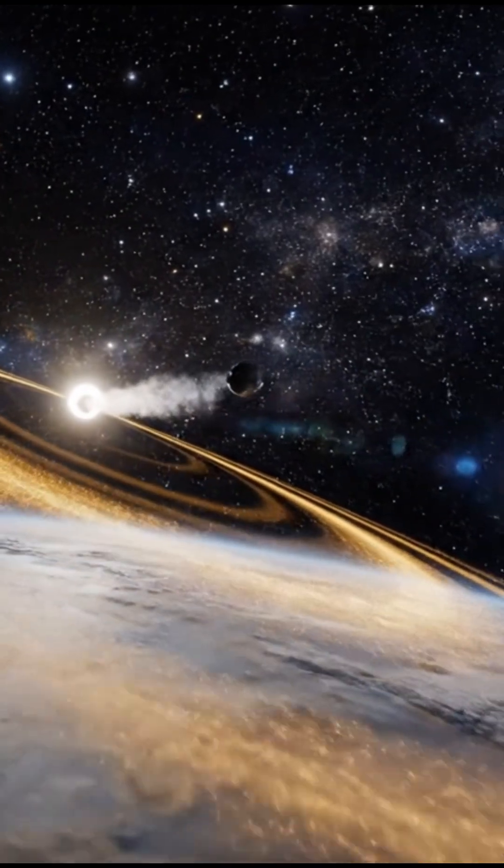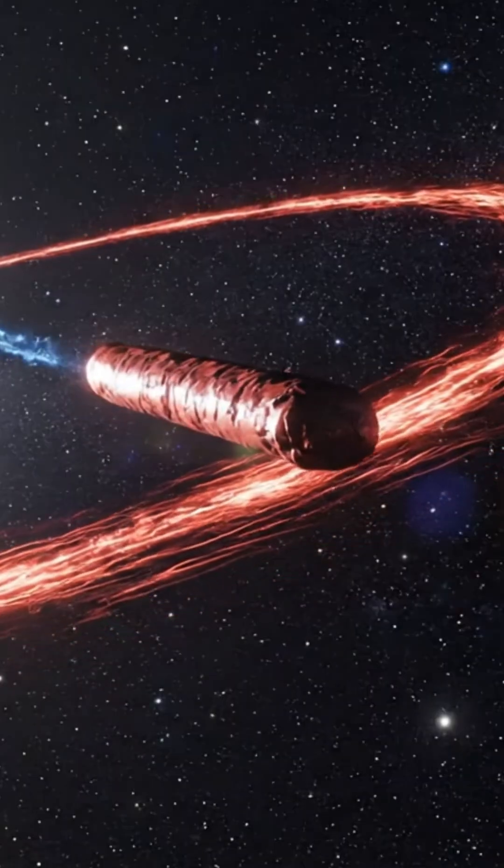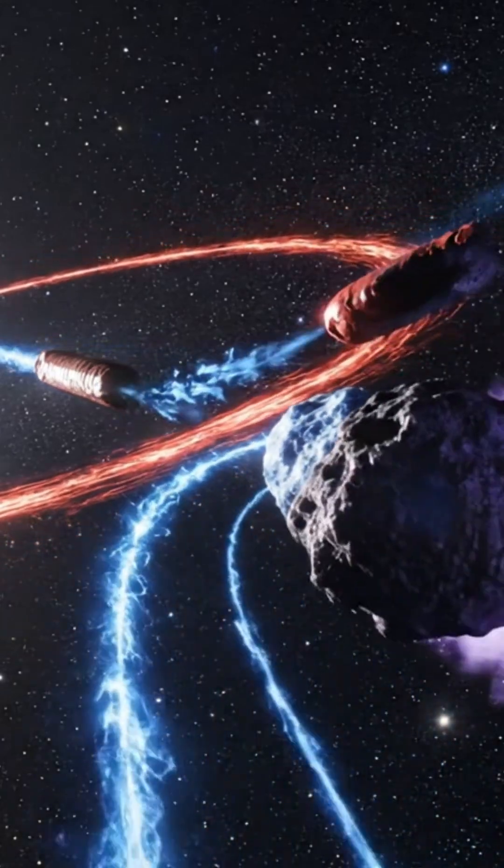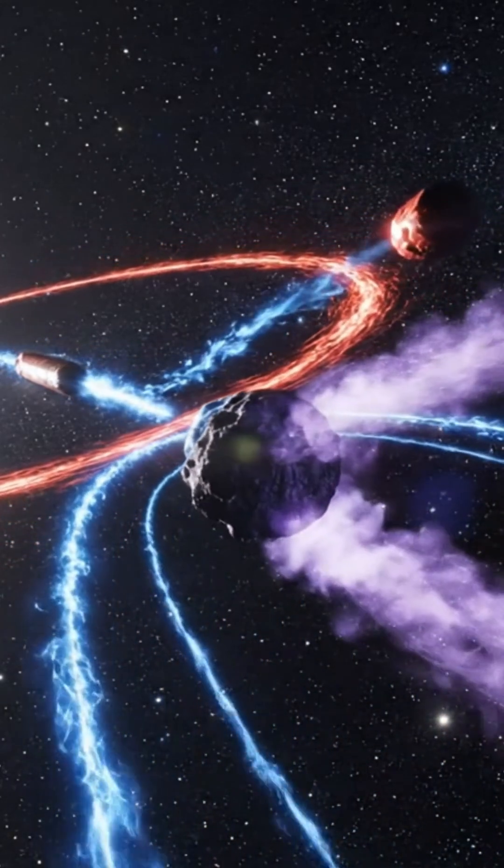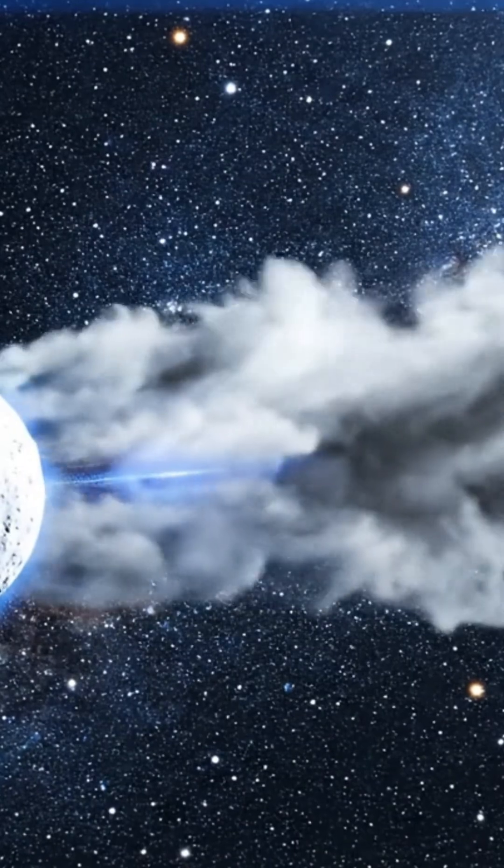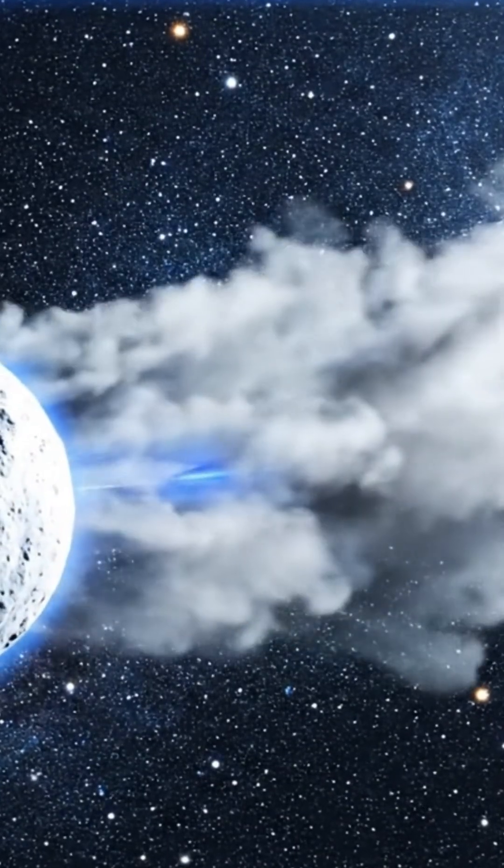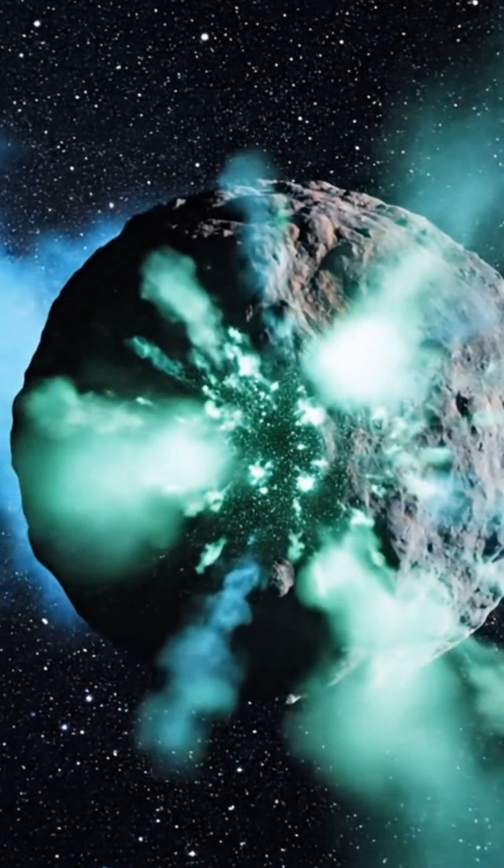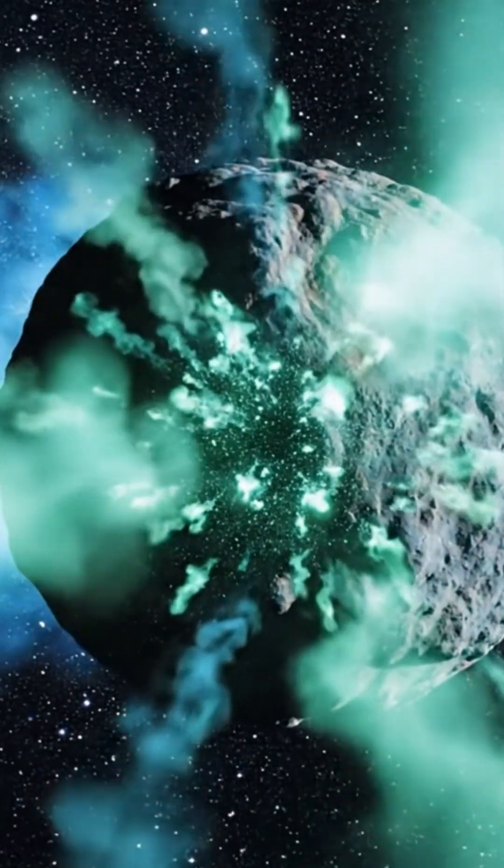By decoding this orbit, scientists can rewind time to trace where it came from and fast forward its future beyond our reach. If its path tells a story, then the next clues lie in the light it reflects, and those clues are explored in the full video.